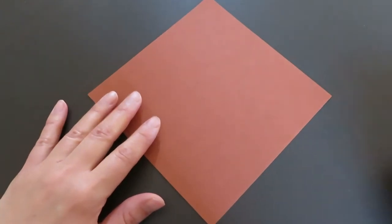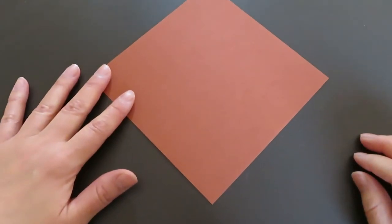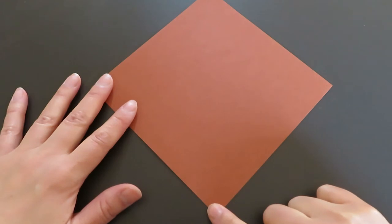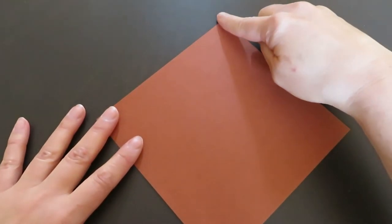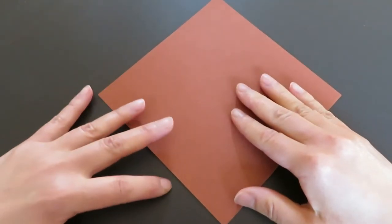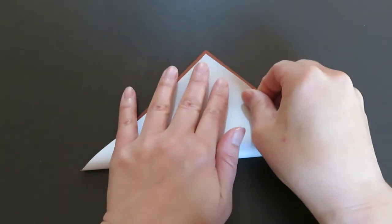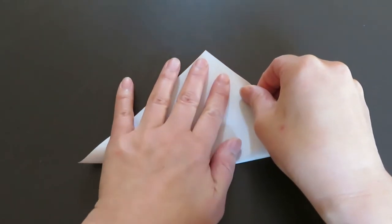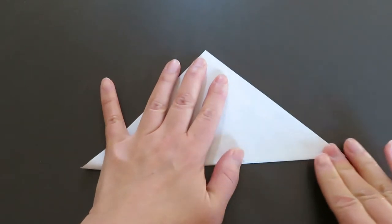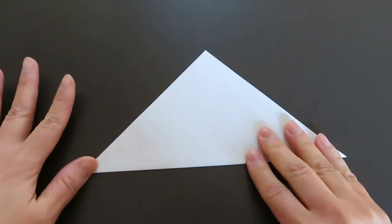First, the color side is up and match this bottom corner and top corner by folding up a triangle. Make sure you make a good crease.